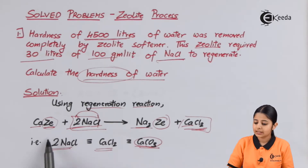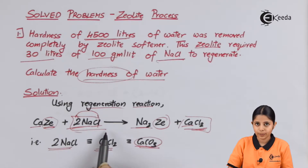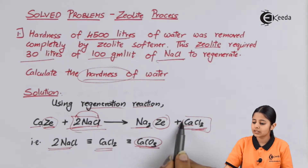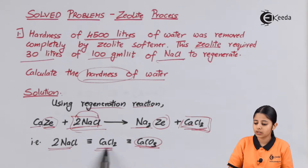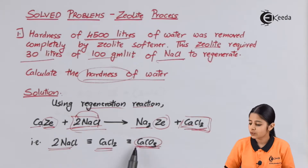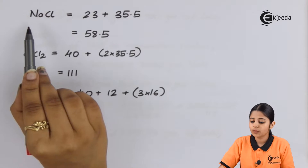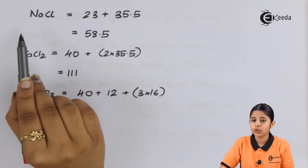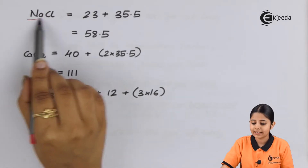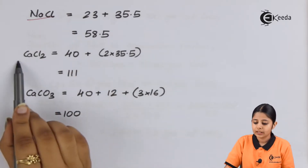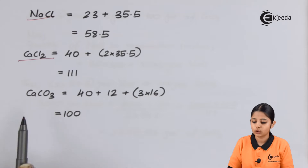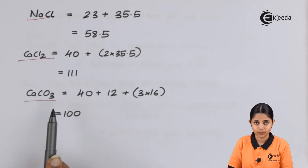NaCl on the reactant side corresponds to CaCl₂ on the product side, which eventually corresponds to CaCO₃. We will now find out the molecular weights of NaCl, CaCl₂, and CaCO₃. To find molecular weights, we add up the atomic weights.